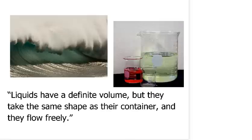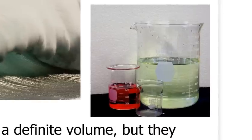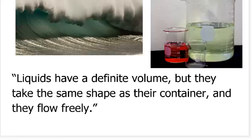Liquids are different from solids — they have some similarities, but they are different. Here you've got an ocean wave. It's flowing and it is not a specific shape. Liquids do not have a clear shape; the only time they take on a shape is when you put them into something. A big beaker full of liquid — the liquid takes on the shape of the beaker. You can't change the volume of a liquid, at least not by much, so in that sense it's similar to a solid: liquids have a definite volume but no definite shape. They flow freely, and if you want to pour them out of the container, you can do that. Solids don't flow like that — they keep their shape.